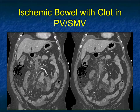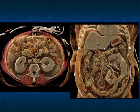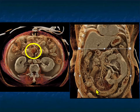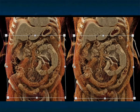Here's a patient with ischemic small bowel with a clot in the portal vein and SMV. You see the thickened small bowel loops, the edema, the haziness in the mesentery, and the extent of involvement. Look how nicely you can see the clot right there on the cinematic rendering — the fold pattern, the edema, the prominent vasorecta, the thrombus, and the abnormalities in the patient's small bowel.